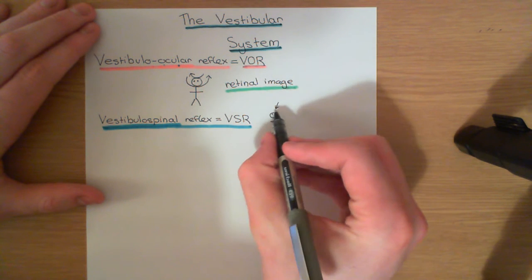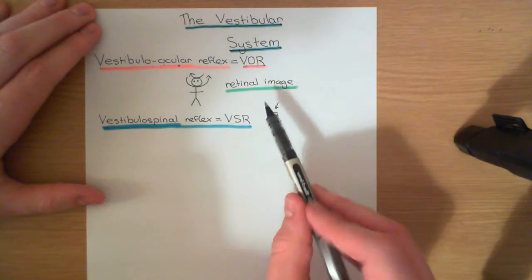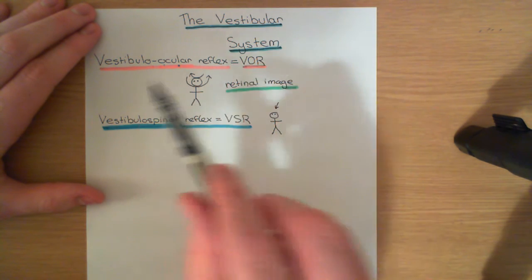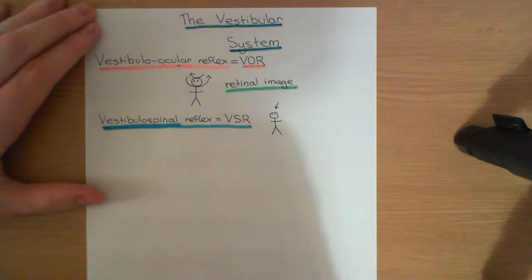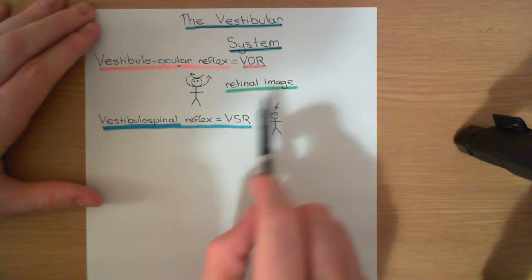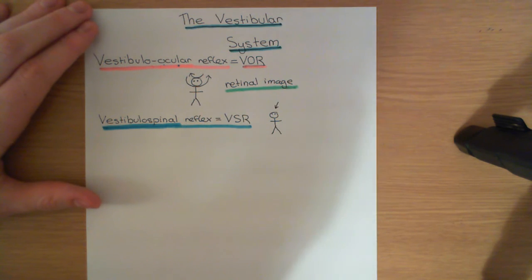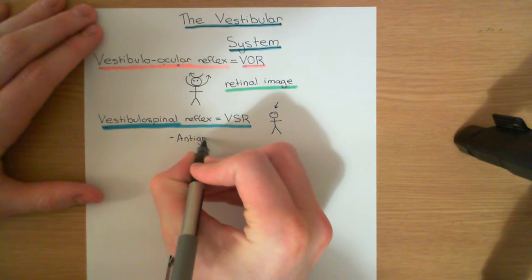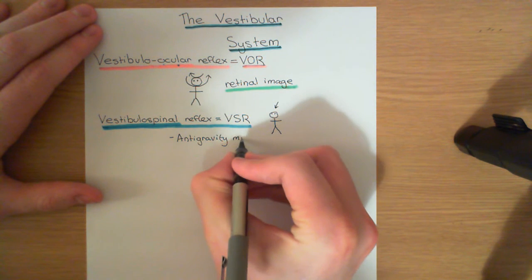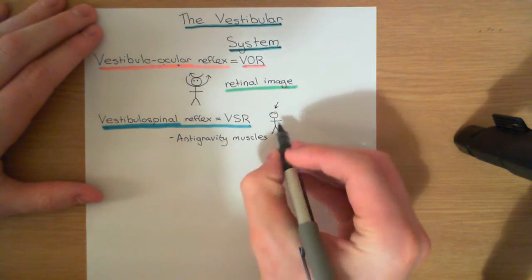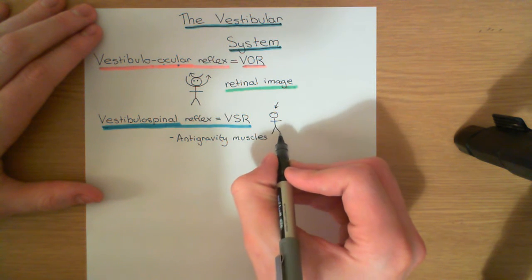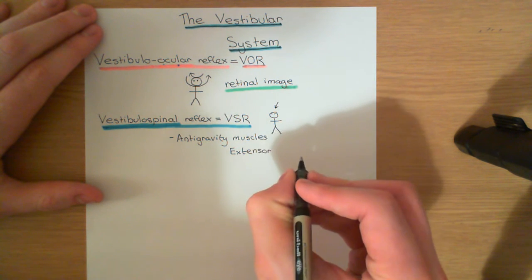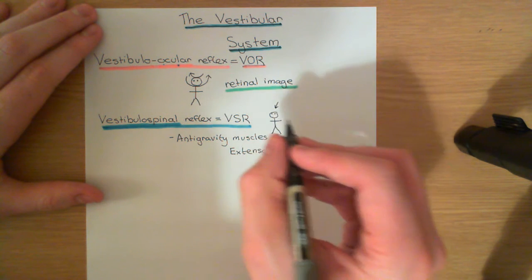When your entire body starts to tilt forwards, the vestibular system detects that and says we're about to fall over. It then activates contraction of certain muscles all over the body to promote you maintaining the standing position. These muscles are collectively referred to as the anti-gravity muscles — they prevent you from falling over. They're generally extensor muscles, particularly in the lower limbs.